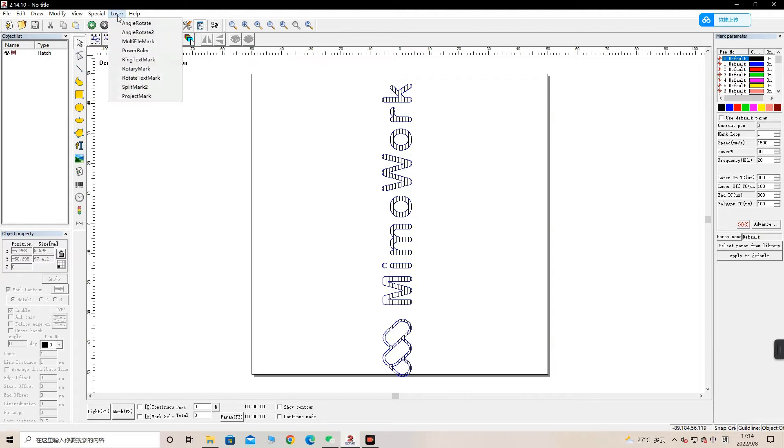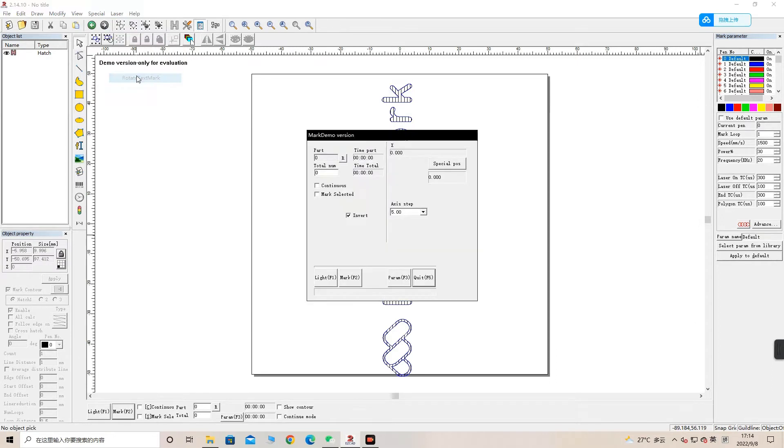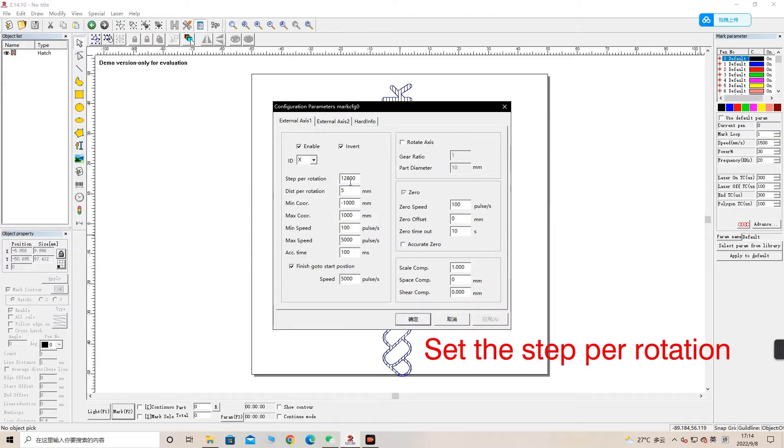Now click Rotate Text Mark on the top side menu bar. Press the F3 button for the parameter setting. We need to set the step per rotation as 51,200 and enable the rotate axis type.